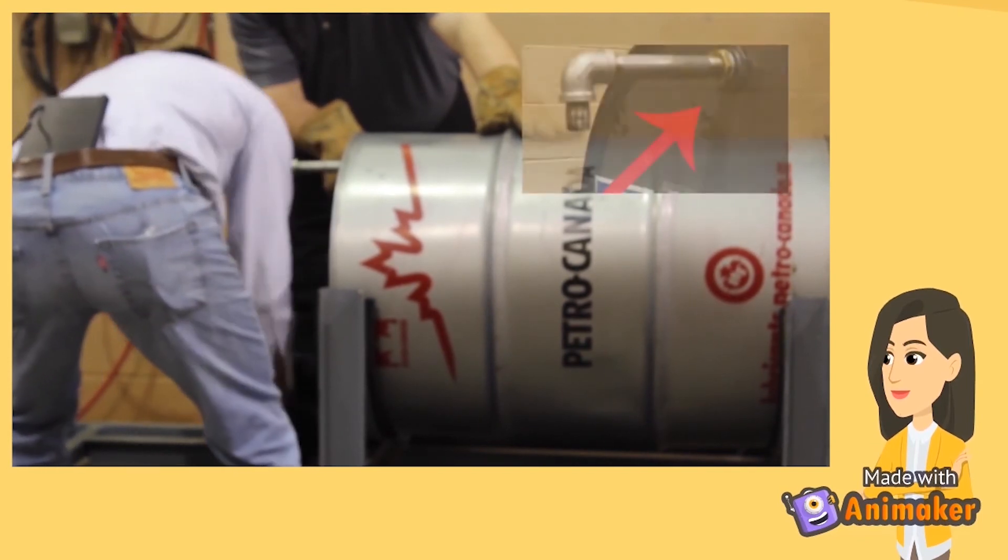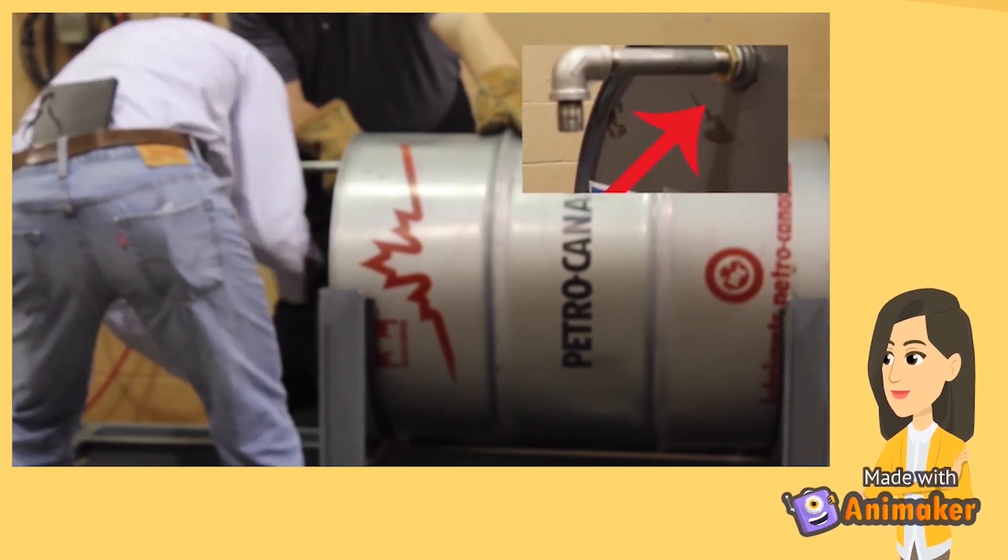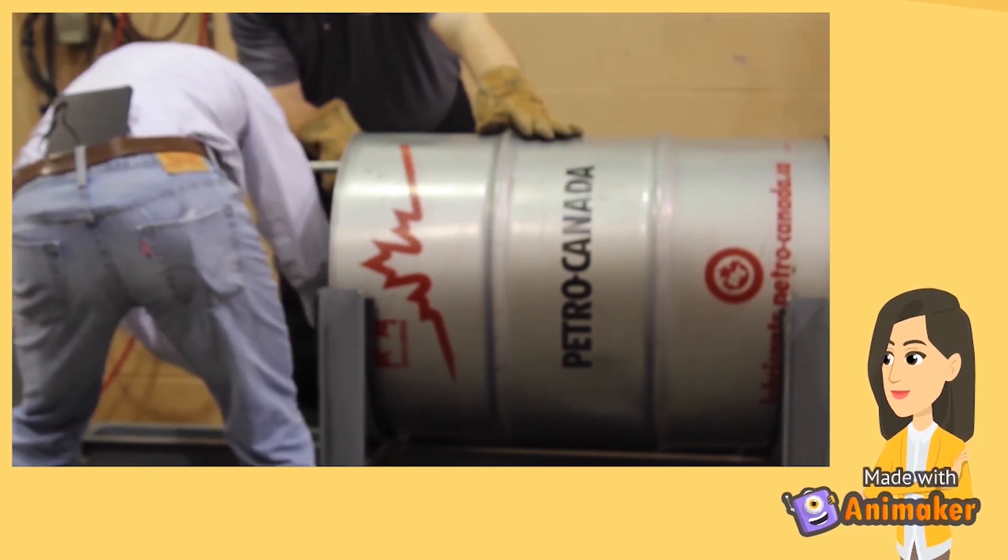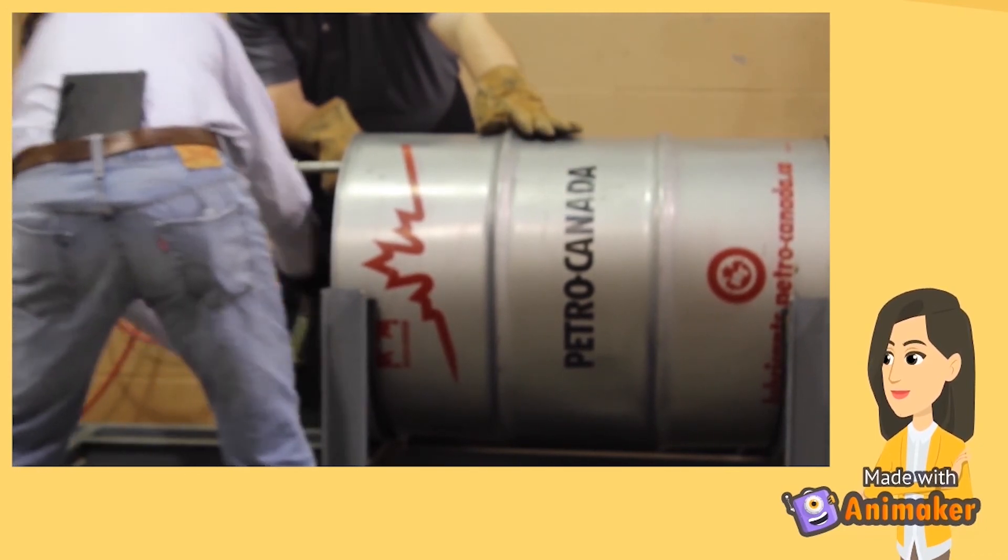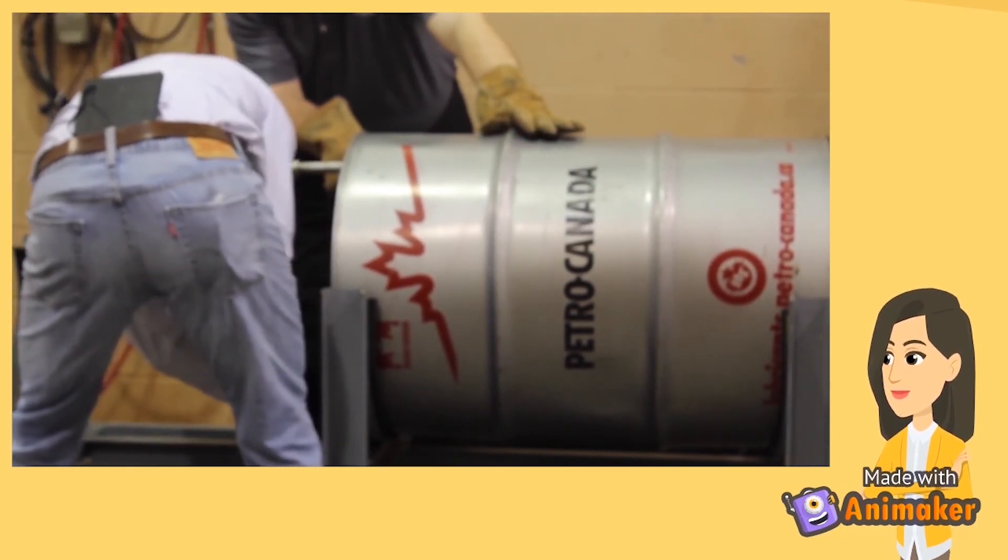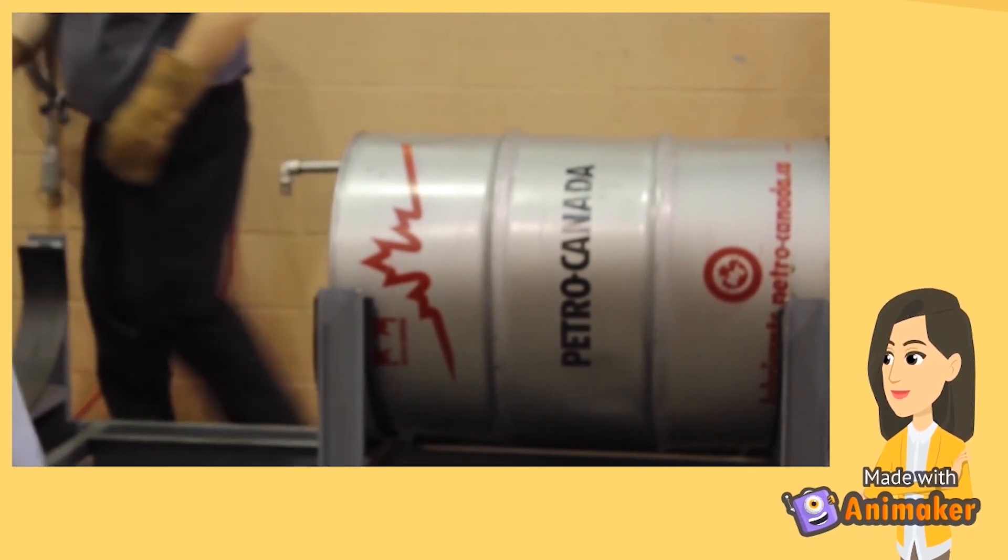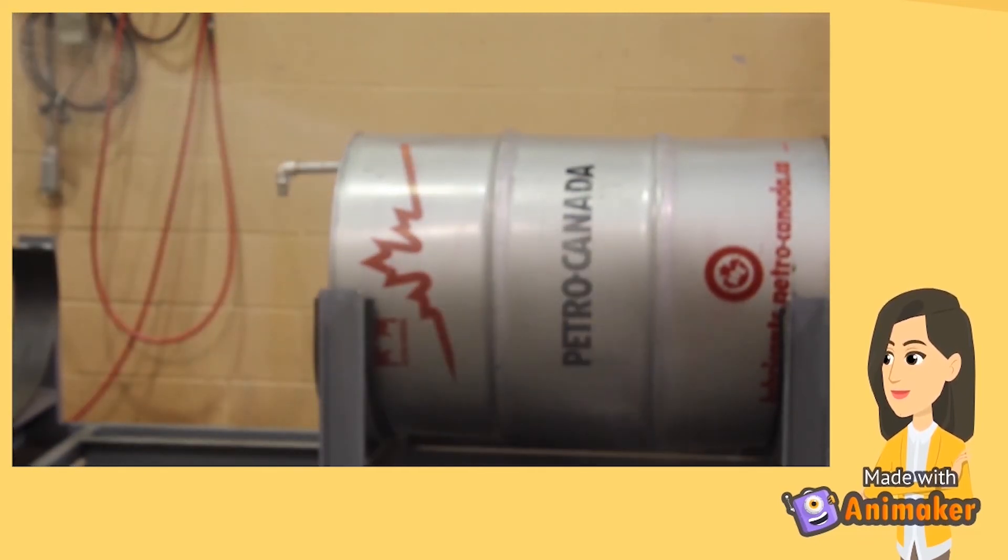This barrel has a three-quarter inch vacuum breaker installed in the smaller bung opening. Once the vacuum inside of the barrel reaches one inch of mercury, the vacuum breaker opens allowing air to replace the collapsing steam and thus preventing the barrel from collapsing.